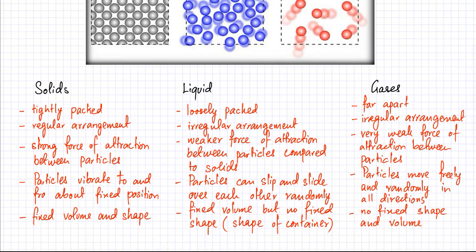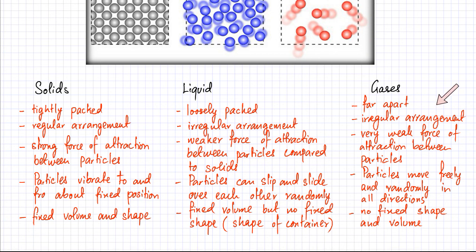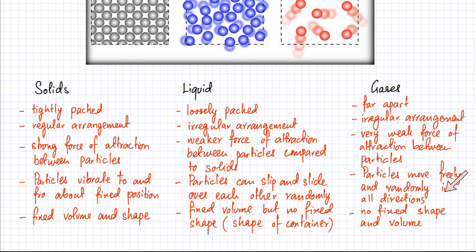The first thing about gas particles is that they are very far apart — in liquids and solids the particles were very close together, but in gases they are far apart. The arrangement is irregular and random. They have a very weak force of attraction between particles, or the force of attraction can be easily overcome because the particles are very energetic. The particles can move freely and randomly in all directions.